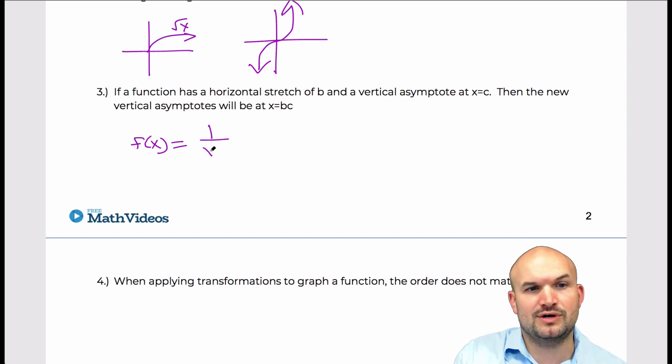So let's look at a function that has a stretch or compression. Let's look at 1 over x minus 2. Okay? So if we look at this, we know that there is a vertical asymptote at x equals 2.